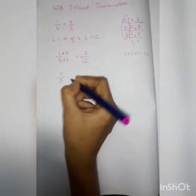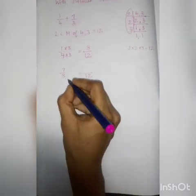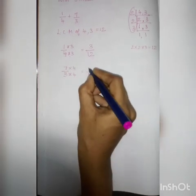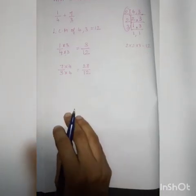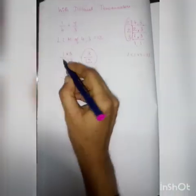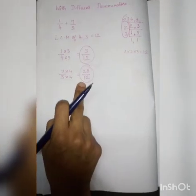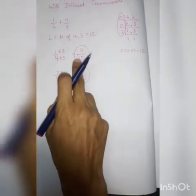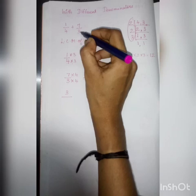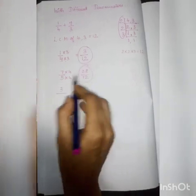Next, for 7 by 3: our denominator should be 12. In the 3 times table, how many times does 4 appear? Three 4s are 12. Likewise, 7 times 4 is 28. So 7 by 3 becomes 28 by 12. We have now got equivalent fractions for 1 by 4 and 7 by 3. Now, instead of 1 by 4 and 7 by 3, we are going to add 3 by 12 and 28 by 12, because these two are equivalent fractions.